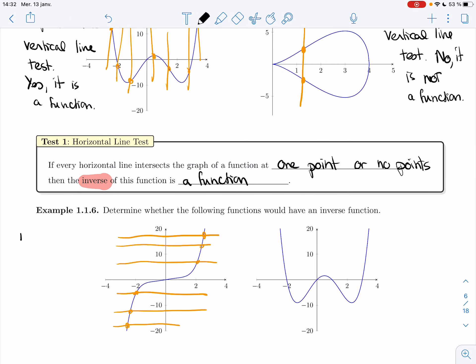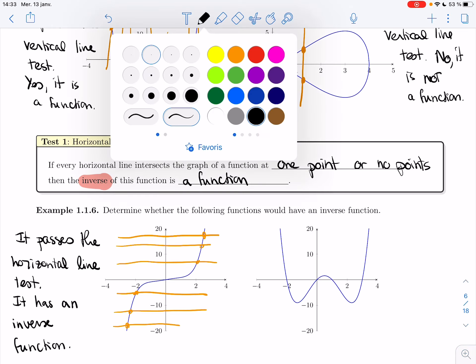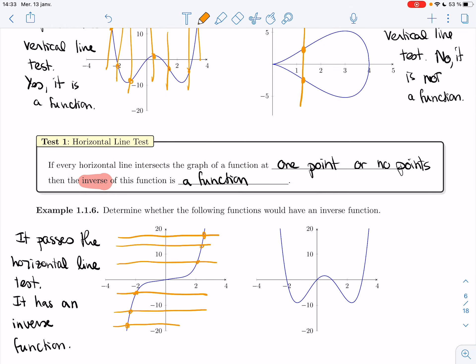So this one, it passes the horizontal line test, the vertical line test. And so it has an inverse function. If I flip it, that graph will pass the vertical line test and will be a function.